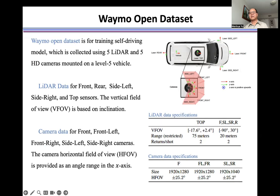The 5 LiDARs include the front, left, right, top, and rear. The 5 HD cameras include the front, front-left, front-right, side-left, and side-right.